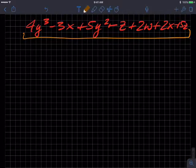It's 4y cubed minus 3x plus 5y squared minus z plus 2w plus 2x minus, that's kind of jammed up in there, minus 15z. So no equal sign, not an equation, but an expression.